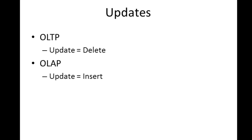So what we find out is that in OLTP and OLAP, updates can have very different effects. In an OLTP system, an update is the equivalent of a delete. When you make a change to data, whatever the data was previously is no longer there. If you change someone's name or someone's address, the old address is gone, and the view you have of the data is the view of what the data looks like today.